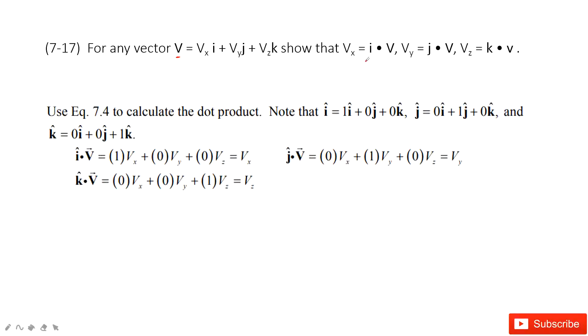And then we need to find the dot product i·v, j·v, and k·v. Here we consider i, j, k as vectors. And we write them in component form. So vector i just has one magnitude on the i component. Vector j has one magnitude on the j component. Similarly for k.